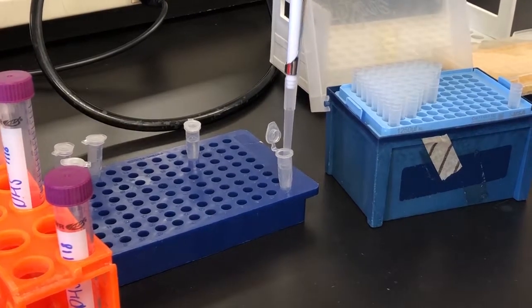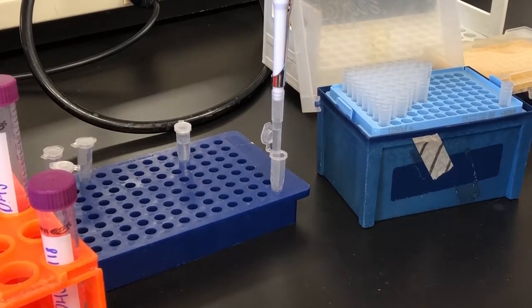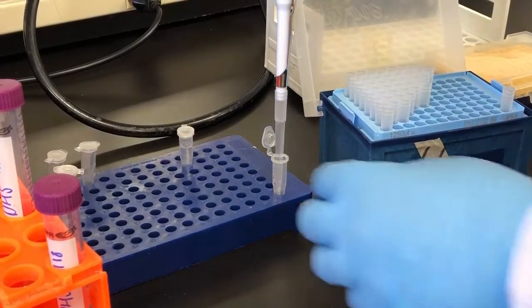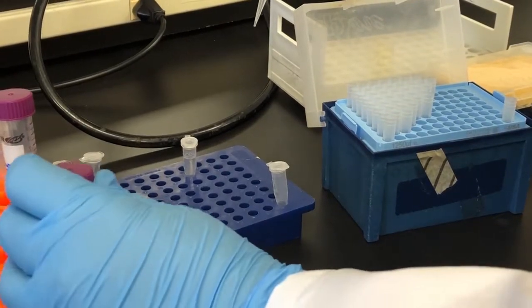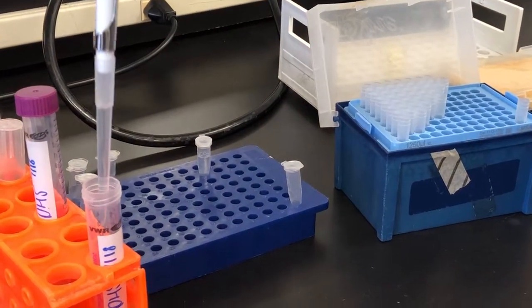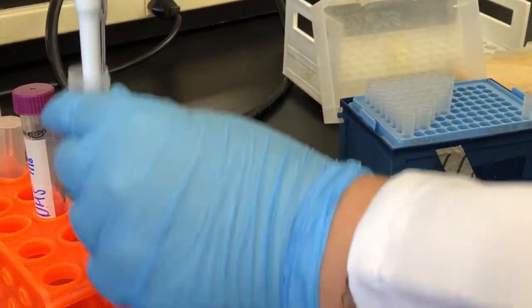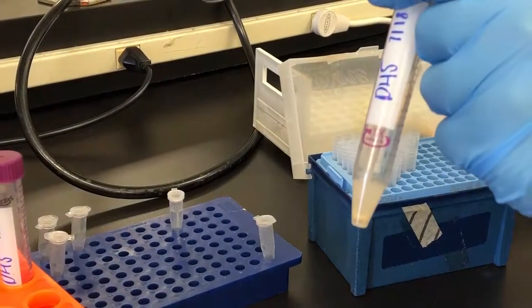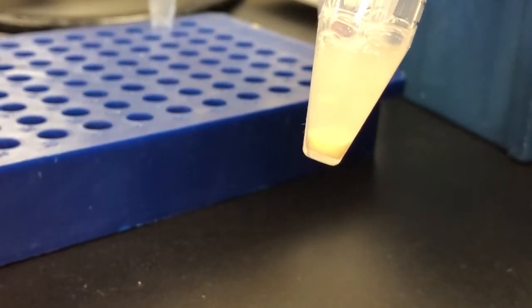Now I'm removing the bacterial cell lysis buffer that contains the ProBlock inhibitor out of the tube and putting it into another tube that contains the bacterial cells that had been spun down to the bottom of the tube. Next I gently pipetted up and down until the pellet was homogeneous with the lysis buffer.